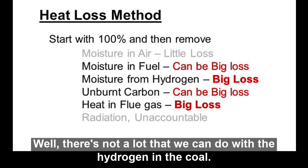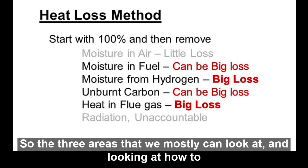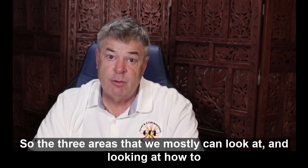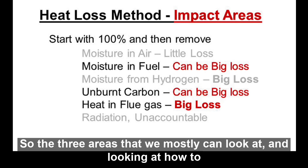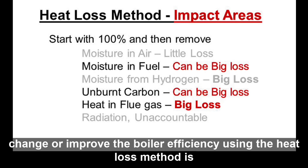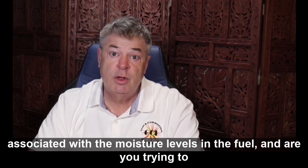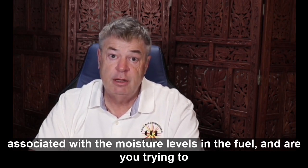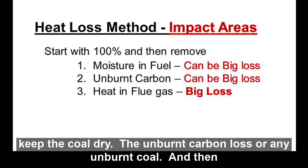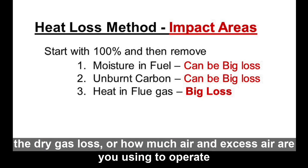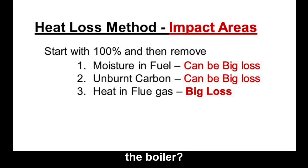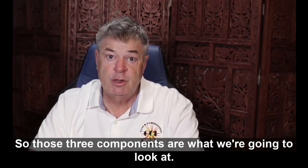There's not a lot we can do with the hydrogen in the coal. So the three areas we can look at to change or improve boiler efficiency using the heat loss method are: moisture levels in the fuel and keeping the coal dry, unburnt carbon loss, and the dry gas loss — meaning how much air and excess air you're using to operate the boiler.